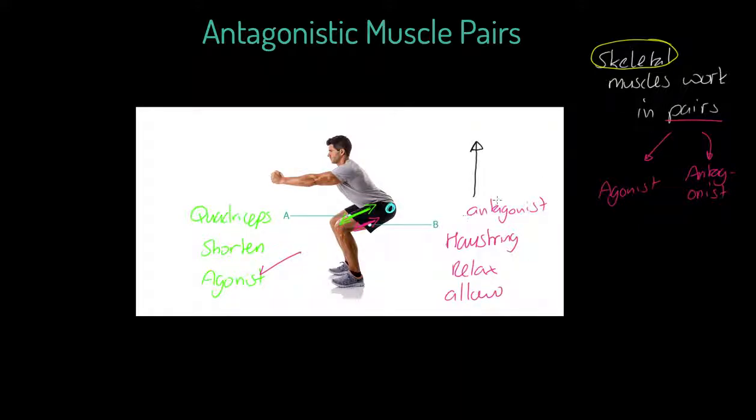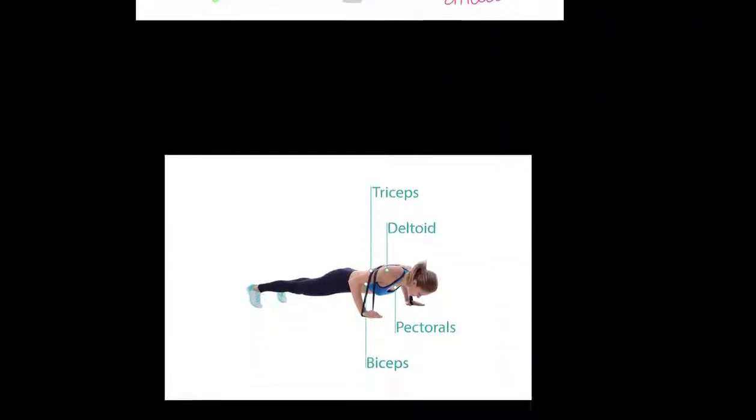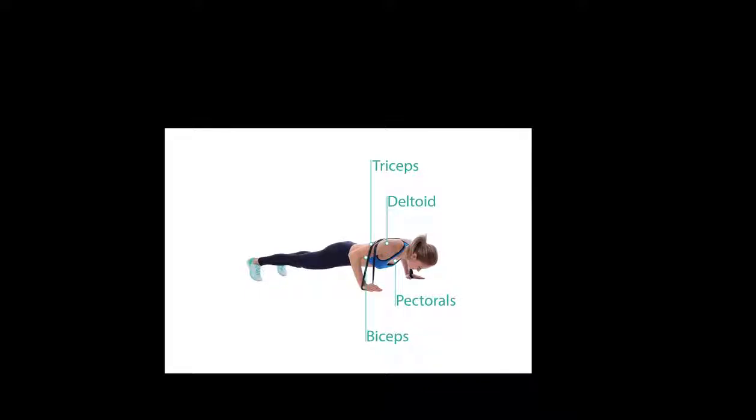So muscles work in pairs. We've got our quadricep and hamstring group as an example. Let's look at another one. Now you'll notice if I was to put a circle around pectorals, a circle around deltoids, these are what we would consider to be fixator muscles in this particular movement. Some people will disagree with that because some people can argue the pectorals is the prime mover for a press-up. But anyway, that's a whole other conversation. Let's assume this athlete is in the upwards phase again of the press-up or the push-up.